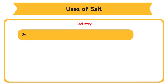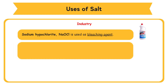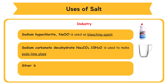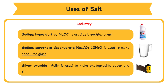Industry: Sodium hypochlorite, NaOCl, is used as a bleaching agent. Sodium carbonate decahydrate, Na2CO3·10H2O, is used to make soda lime glass. Silver bromide, AgBr, is used to make photographic paper and film.